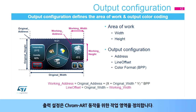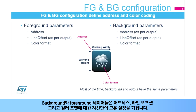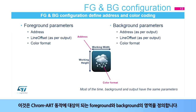The output configuration defines the working area for the Chroma Art operation. The address and line offset parameters are used to select which sub-area of the output is concerned. The background and foreground layers have their own configuration for address, line offset, and color format, defining which area of each layer is targeted by the Chroma Art operations.